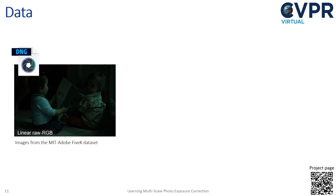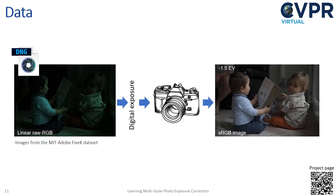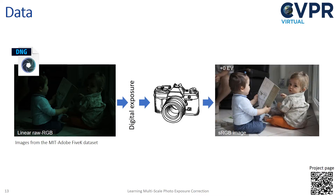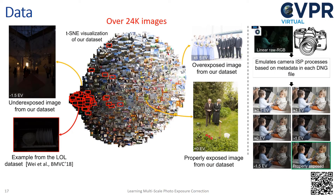This led us to develop a dataset that starts directly with raw images. Specifically, we use the Adobe MIT 5K dataset and apply digital exposures to the linear raw images. We then render the raw images using a software camera ISP to produce several sRGB images of different exposures. We use the Adobe MIT 5K expert image that applies manual adjustments as our target ground truth, considered properly exposed. This procedure allowed us to produce a realistic dataset of over 24,000 images, spanning a much larger range of exposure errors than existing datasets. Our dataset is publicly available.